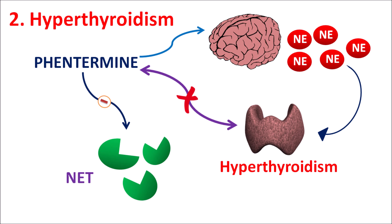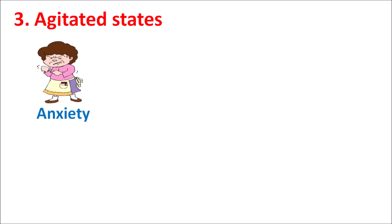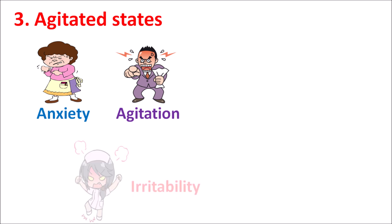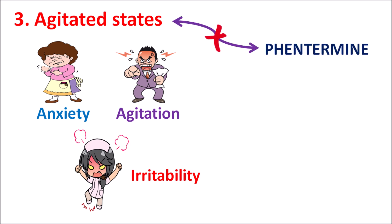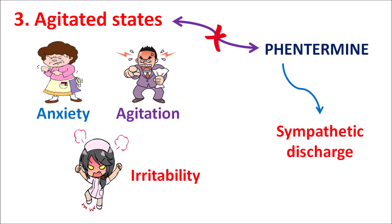The third condition is agitated states. In some patients, excessive anxiety, severe agitation, irritability, and restlessness may be observed. Phentermine is contraindicated in these cases because it can increase central sympathetic discharge, thereby centrally increasing anxiety, agitation, and insomnia. In patients with any previous history of agitated states, this drug is contraindicated.